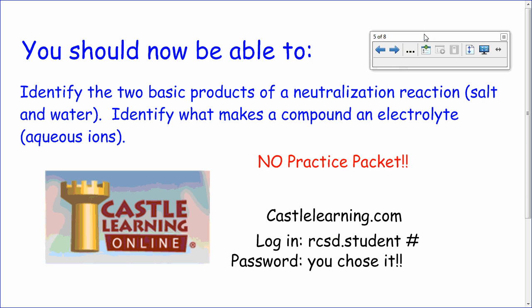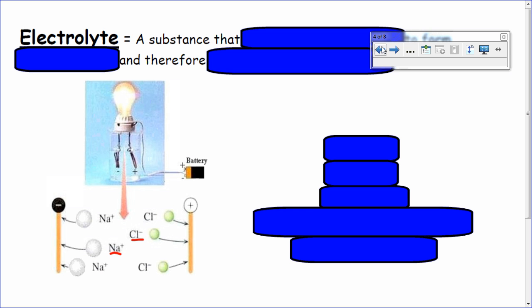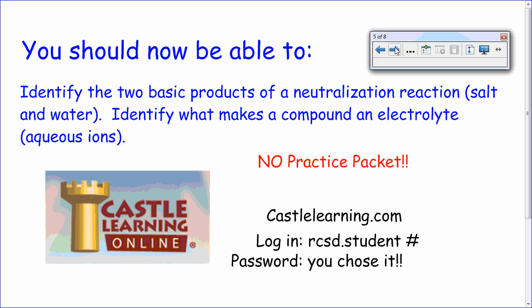Now, identify two basic products of a neutralization reaction: salt and water. Identify what makes a compound an electrolyte — it's those aqueous ions. Whenever a salt dissociates, you get negatives and positives. Whenever an acid dissociates, you get negatives and positives. Whenever a base dissociates, you get negatives and positives. Thanks for watching this clarification lecture.